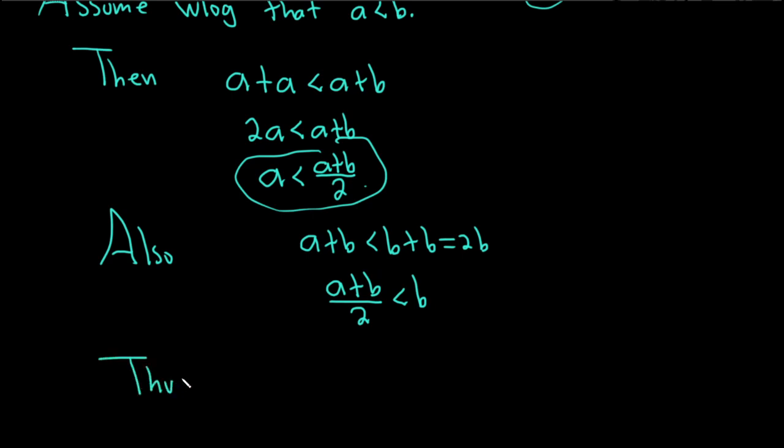We have A less than A plus B over 2, and A plus B over 2 less than B. Thus, A is less than A plus B over 2, which is less than B. Given two rational numbers, we found a rational number between them. That completes the proof. I hope this video has been helpful.